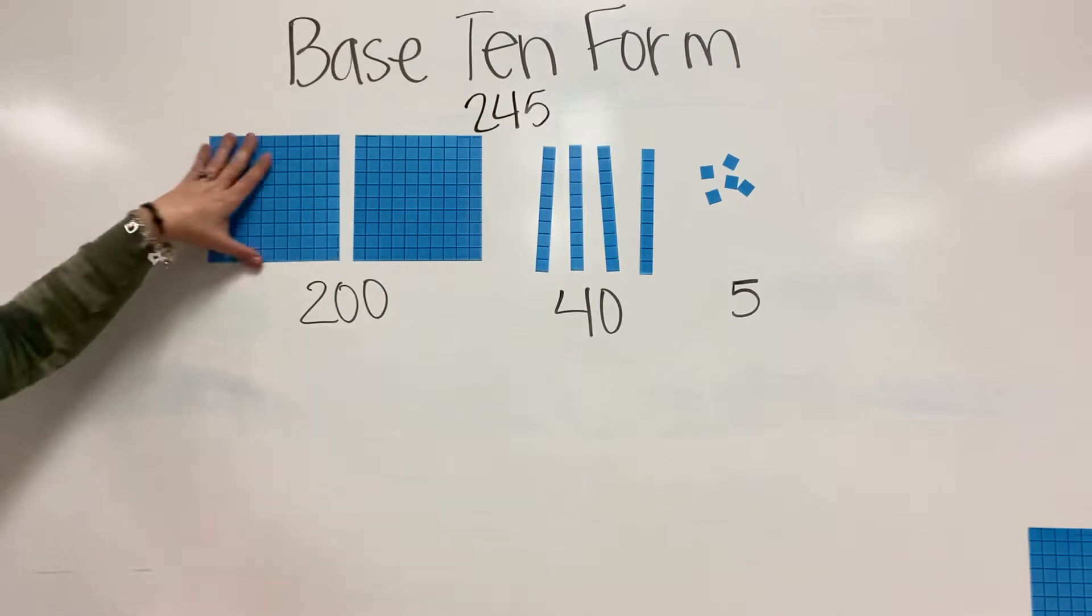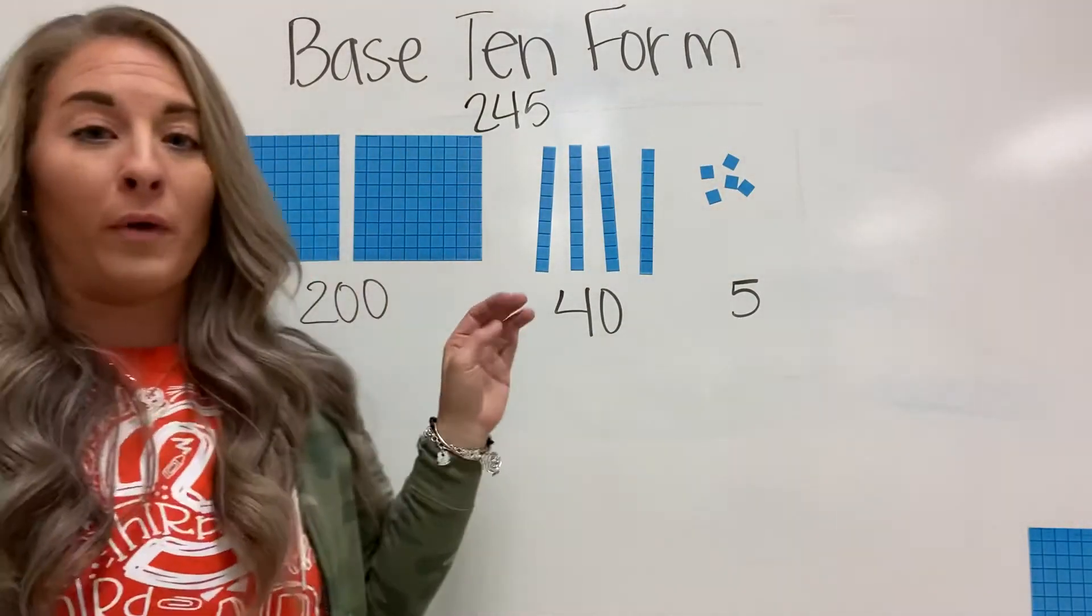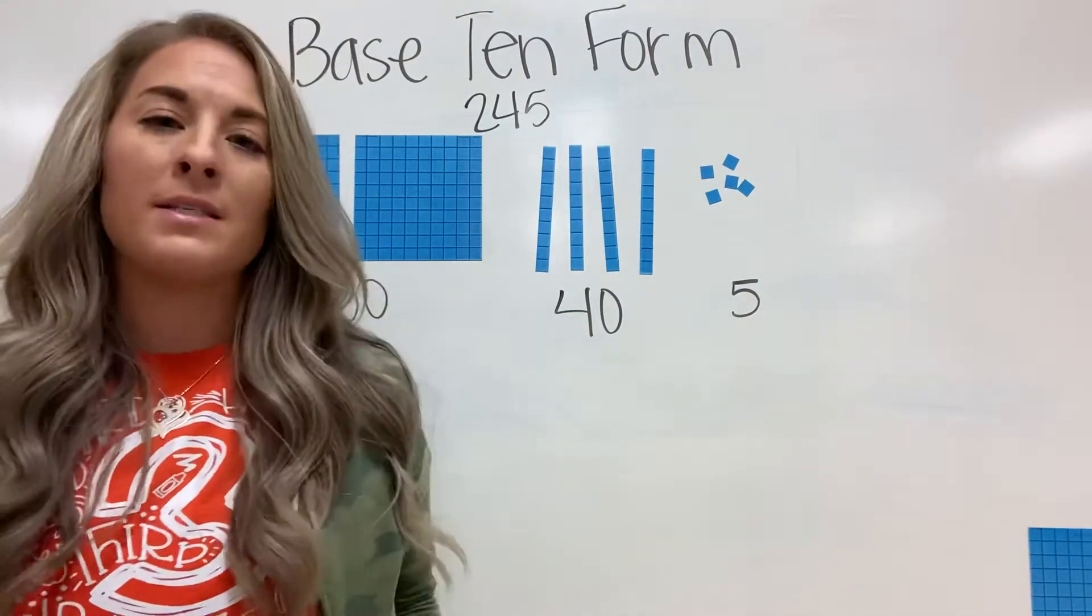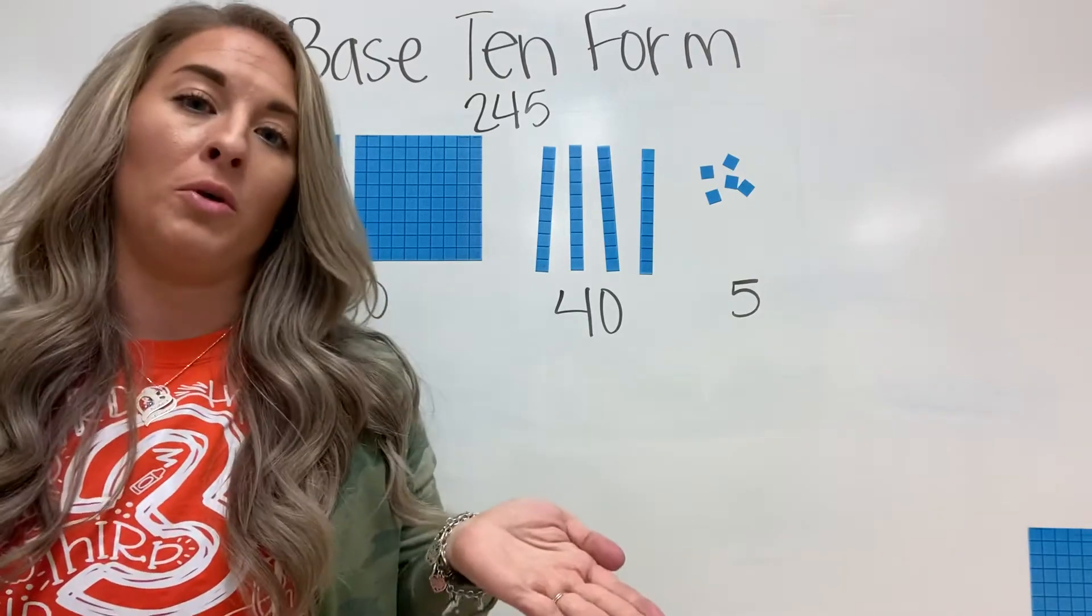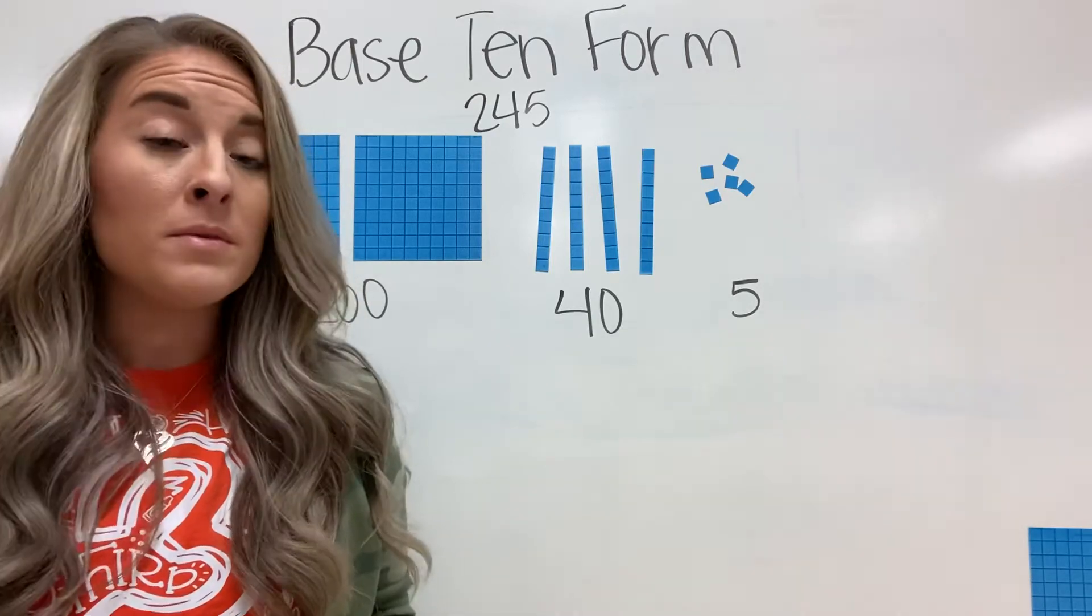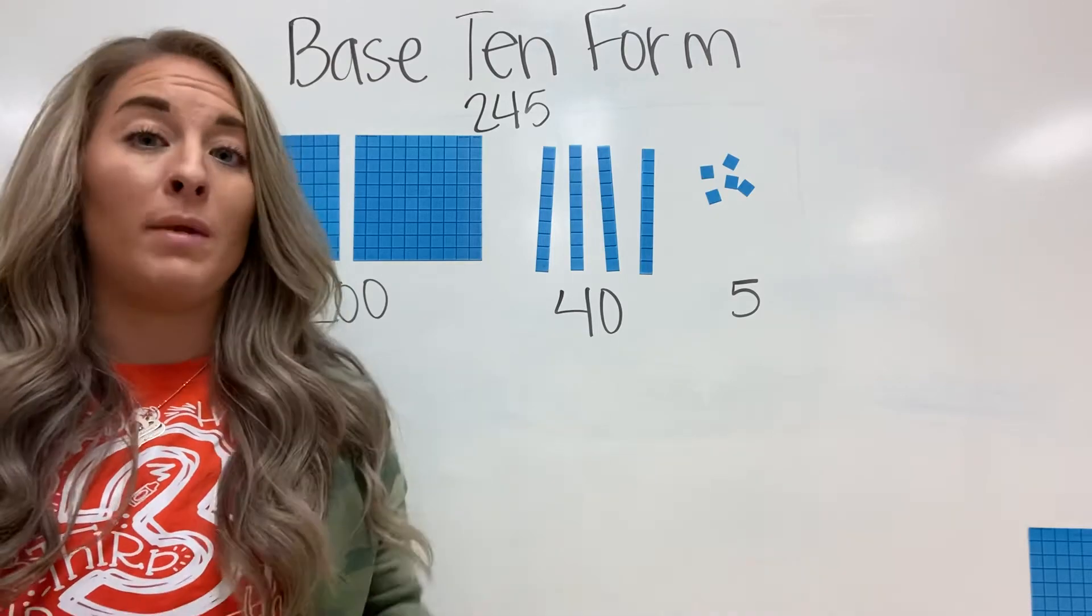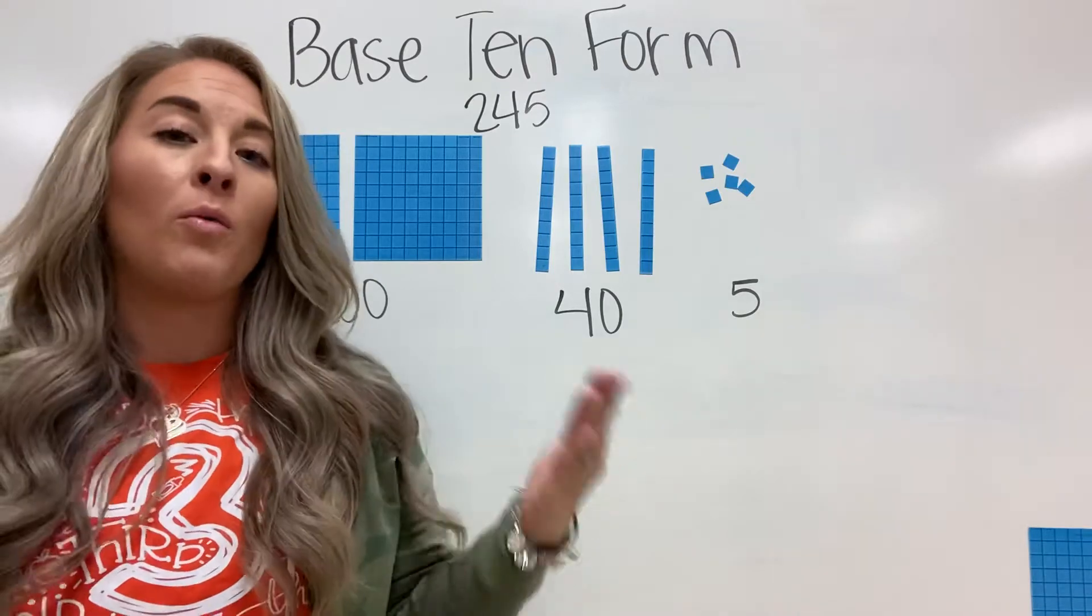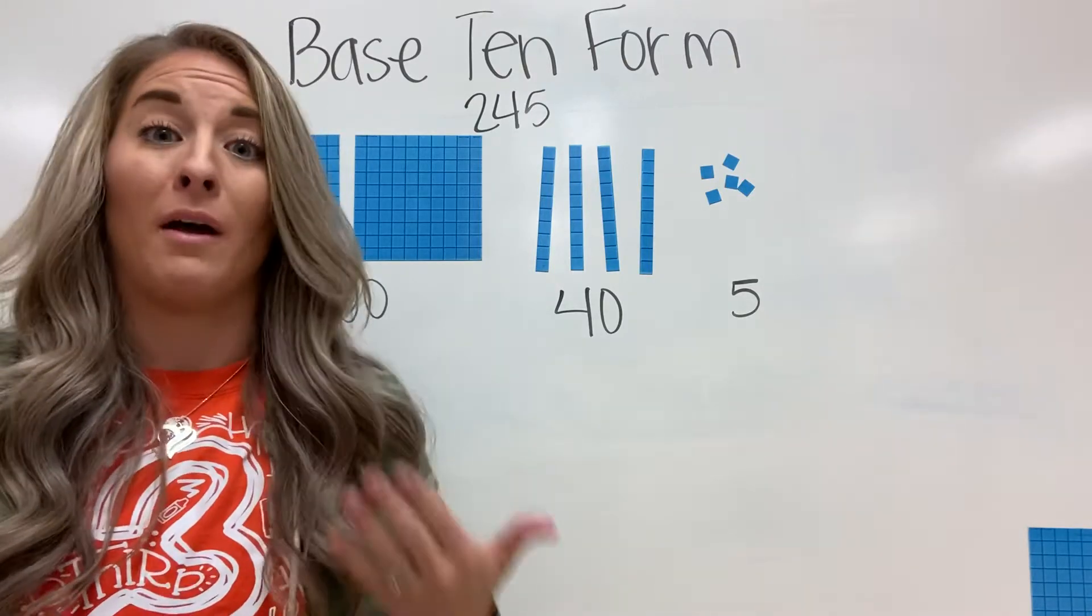This is the most basic way to show 245. There are lots of ways to show 245. If I told you I had 50 cents in my pocket, there are lots of coins I could pull out and show you. I could show you two quarters, five dimes, 10 nickels, 50 pennies, or a mix of all of those together, like a quarter, two dimes, and a nickel. No matter what I show you, I have 50 cents. There are lots of ways to represent a value.